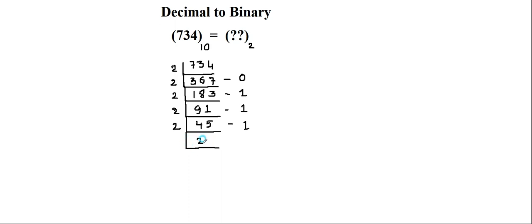Dividing 45 by 2: 2×2 is 4, then consider 5 — 2×2 is 4, remainder is 1. The quotient is 22. Now divide 22 by 2: 2×11 is 22, remainder is 0. Then divide 11 by 2: 2×5 is 10, remainder is 1.